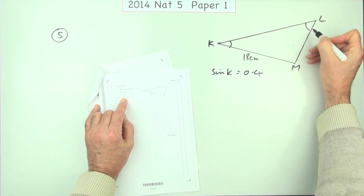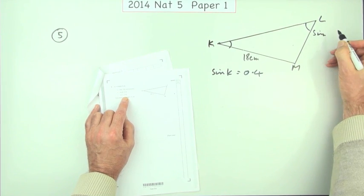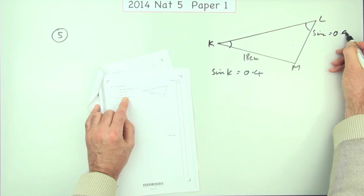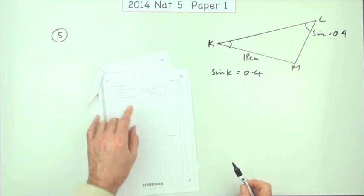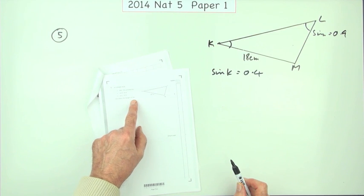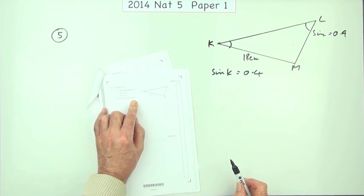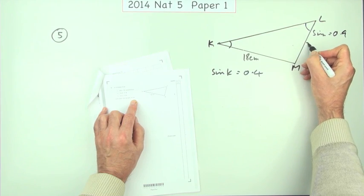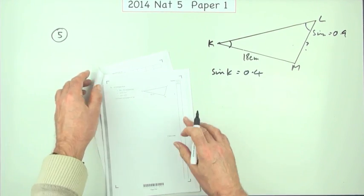And it mentions this angle. And it says the sine of that angle is 0.9. That's why it can be handy to put the information down just now. And it says what's the length of LM? That's this side here, for three marks.